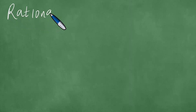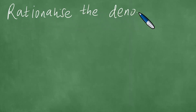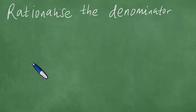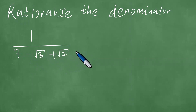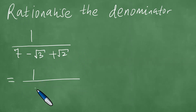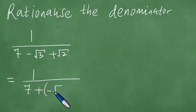In the next case, we still need to rationalize the denominator. Given 1 over 7 minus the square root of 3 plus the square root of 2 — this is the question given, and we need to rationalize the denominator here. First things first, we realize that we have 7, and we can put a plus here like so. Just associate the terms a little bit.